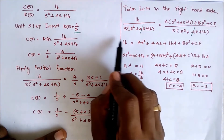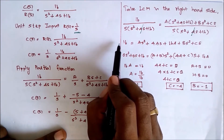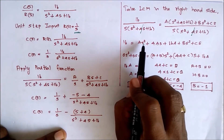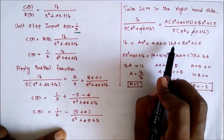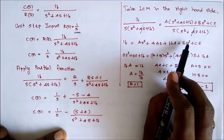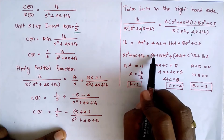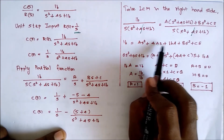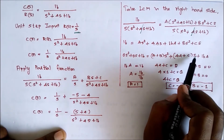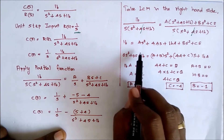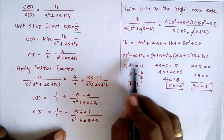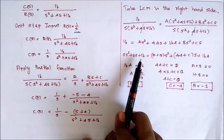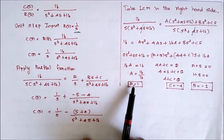There is no S squared or S term on the left side, so we consider 0·S squared plus 0·S plus 16 on the left. Comparing constant terms: 16A equals 16, so A equals 1. Comparing S terms: 4A plus C equals 0; substituting A equals 1 gives 4 plus C equals 0, so C equals minus 4. Comparing S squared terms: A plus B equals 0; substituting A equals 1 gives B equals minus 1.